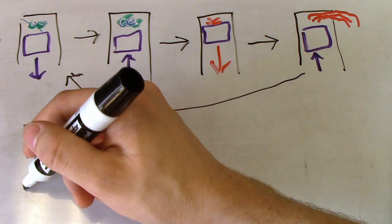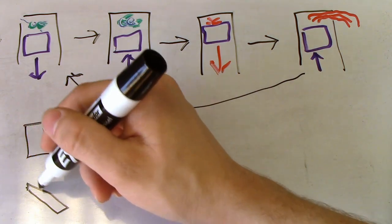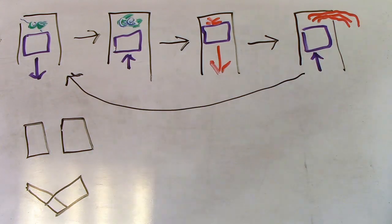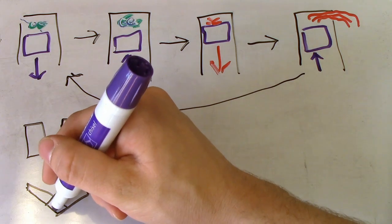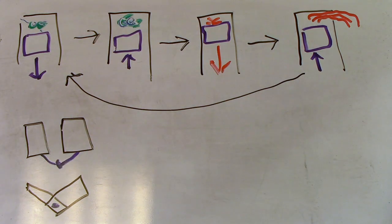Piston props always have multiple cylinders to maintain smooth power production, but the arrangement of these cylinders varies. Sometimes they are lined up in a row or placed in a V pattern, like on cars.